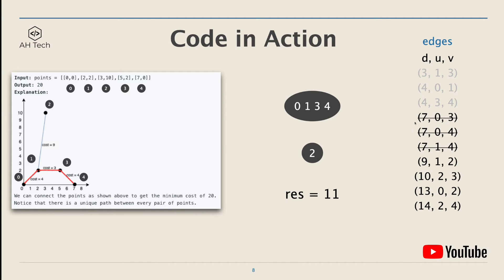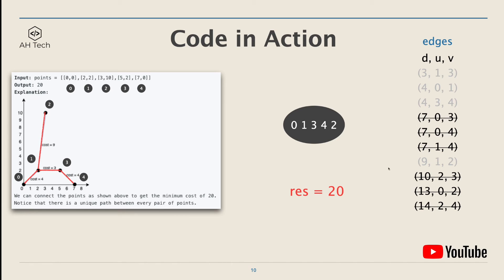For the next three edges — zero and three, zero and four, and one and four — they are already in the same set, so we skip through these three edges. Next, points one and two are in different disjoint sets, so we add distance nine to the result, making result equal to 20. Now points one and two are connected. The rest of the edges are already in the same sets, so nothing will happen. All points on the plane are connected, and the final result is 20.